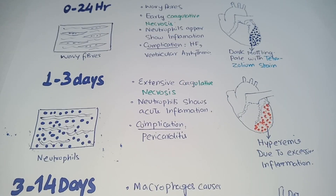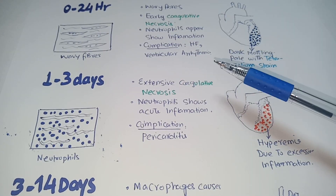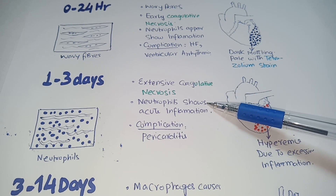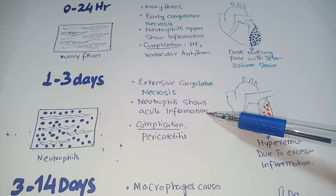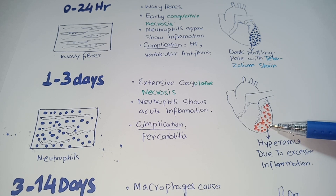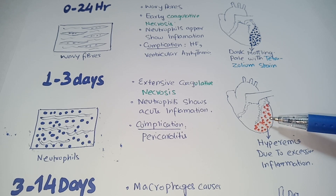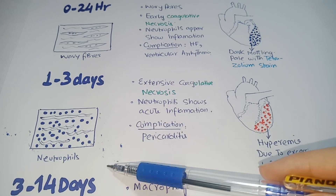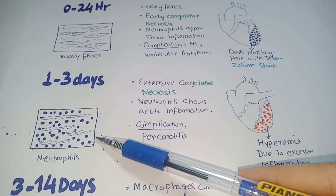From 1–3 days following myocardial infarction, coagulative necrosis becomes extensive and neutrophilic infiltration shows extensive acute inflammation. As the figure shows hyperemia — and as we know, acute inflammation is characterized by redness. So after 1–3 days, the infarcted area appears red due to excessive inflammation, and microscopy shows infiltration of neutrophils.